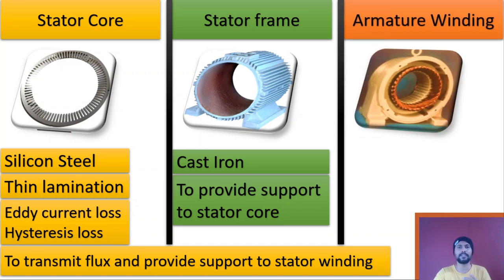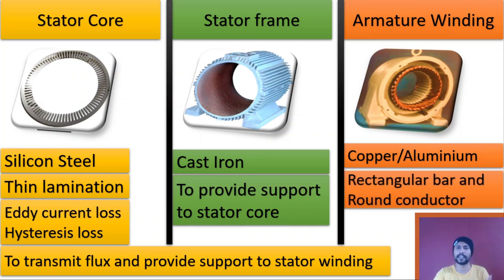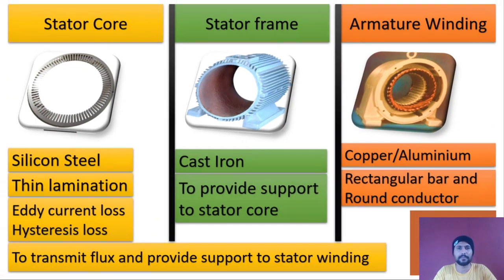Let's move to the third section: armature winding. Armature winding is done in the stator core. The materials used in armature winding are copper and aluminium; generally copper is preferred over aluminium. For higher-rating machines, the copper conductors are generally rectangular bars, whereas for lower-rating machines rounded conductors are used. The main reason for using rectangular bars is their good space utilization factor.